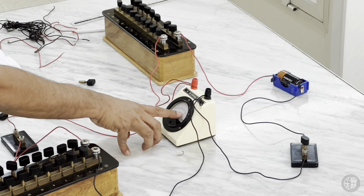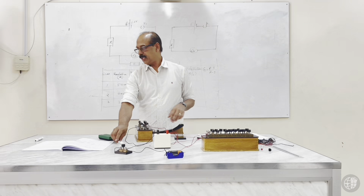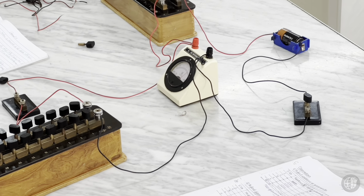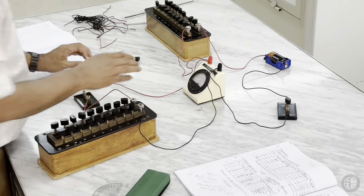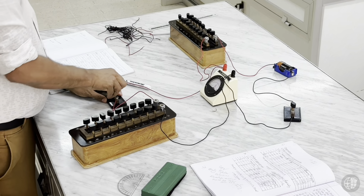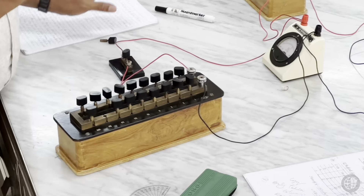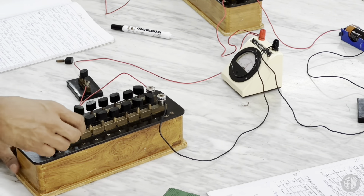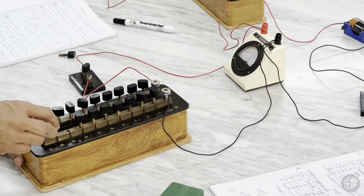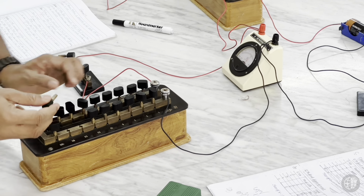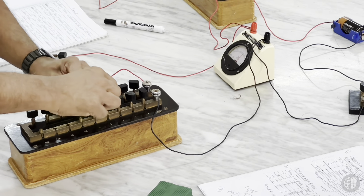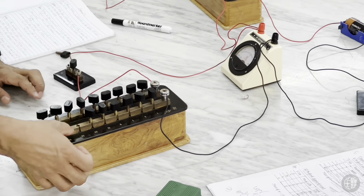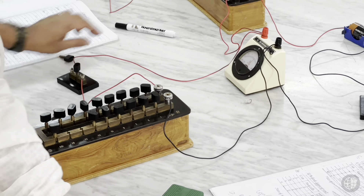With K2 open, deflection is 14. We need to bring it to 7 (half). Close K2 and adjust the shunt resistance. Trying 150 ohms — deflection falls below 8. Trying 100 ohms — it increases too much. Trying 70 ohms — deflection comes to exactly 7. Mark the shunt value as 70 ohms.